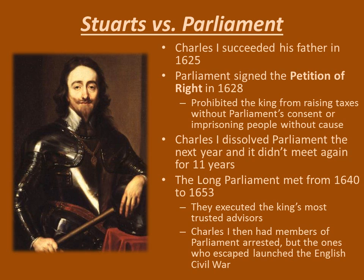James I passed off the rest of his reign — he died in 1625, succeeded by his son, King Charles I. Charles I continued the same thing his father had done in asserting divine right and ignoring Parliament at every chance he got.